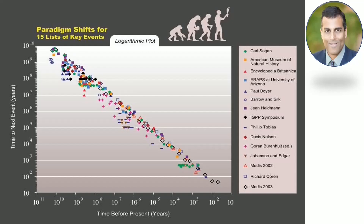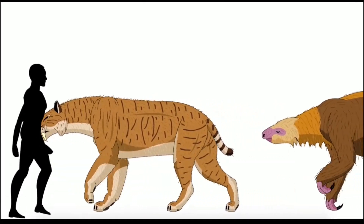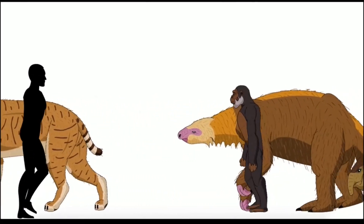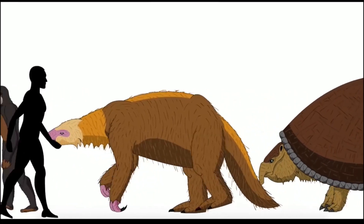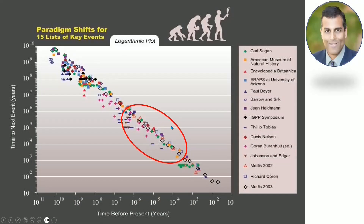Here we are in episode five and we visit the Ray Kurzweil chart again. In this episode we are going to focus on the zone after the extinction of the dinosaurs all the way up to recorded human civilization — what happened in between? This is a huge portion of the chart. We're working our way to the present very methodically.